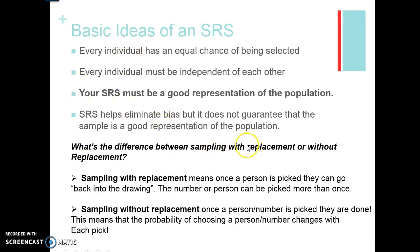What's the difference between sampling with replacement and without replacement? Sampling with replacement means once a person is picked, they can go back into the drawing and be picked more than once. Sampling without replacement means once a person is picked, they're done — the probability of choosing the next person changes with each pick. With 15 people, once you remove one, the probability of the next pick is out of 14 instead of 15, then 13, and so on.